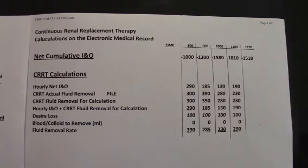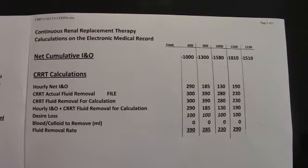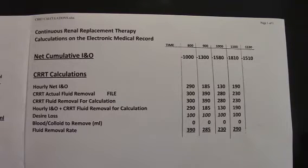It is very important that after you place this number, before moving to line number three, you will have to file this. There's a computer glitch — if you don't file it, then your fluid removal rate will be inaccurate. Instead of 390 ml, it will double to a removal rate of 690 ml.